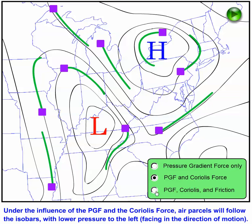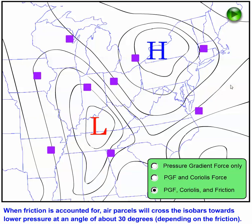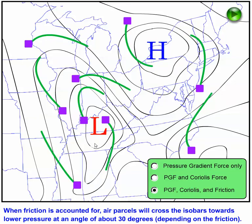Now let's add friction for the most realistic look at how air really flows near Earth's surface. Friction disrupts geostrophic balance by slowing down the air parcels, which weakens the Coriolis force slightly. Eventually, a balance develops between the pressure gradient force, the Coriolis force, and friction, with air parcels now crossing local isobars inward toward lower pressure as they flow counterclockwise around lows and clockwise around highs.